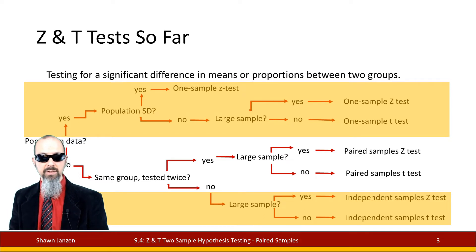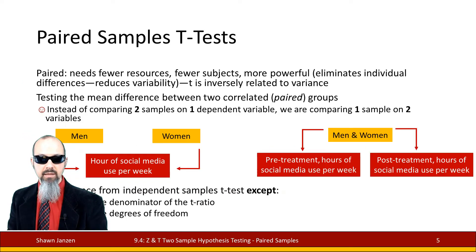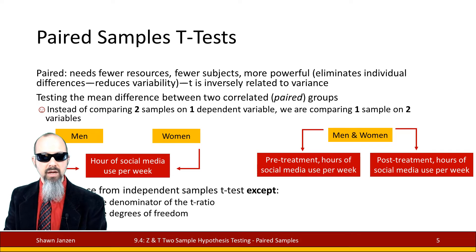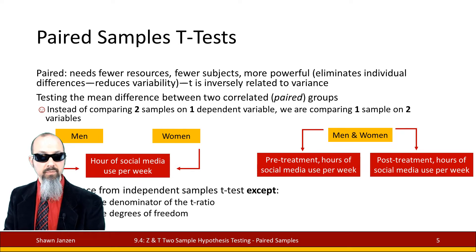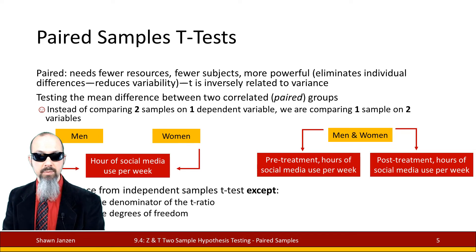Paired samples takes a slightly different twist. In the paired sample, we have the same group being measured twice, and because it's the same group there are certain characteristics that make it a little different. Compared to the independent sample version, it needs fewer resources and fewer people, and it's more powerful because we're eliminating individual differences — it's the same person, group, or item that's had something happen to it more than once. So we can reduce the amount of variability we might expect.